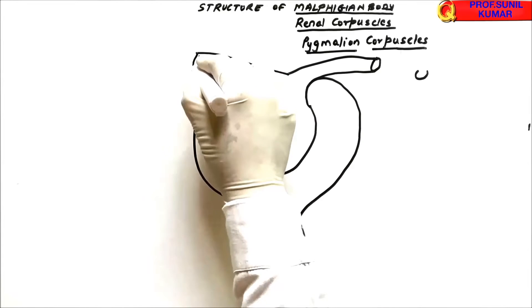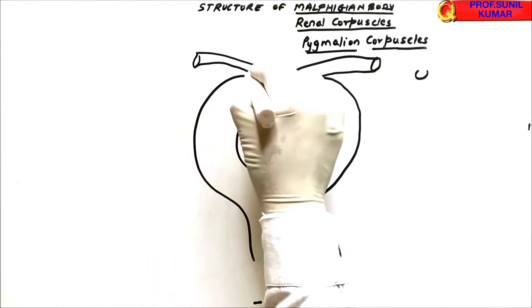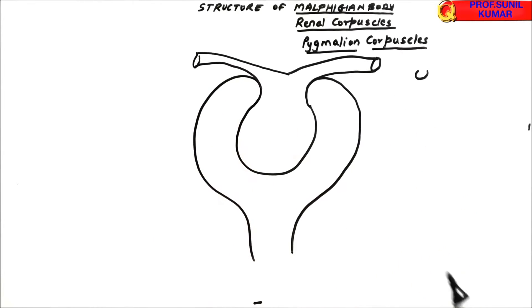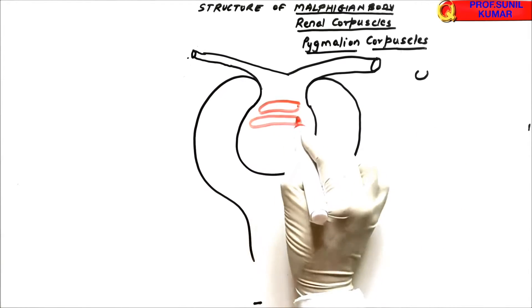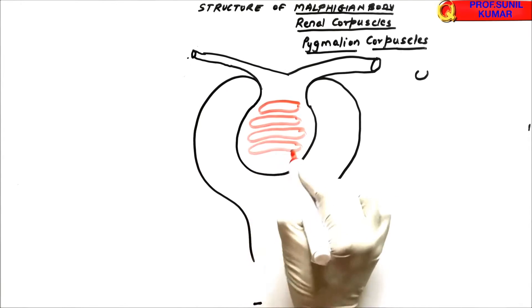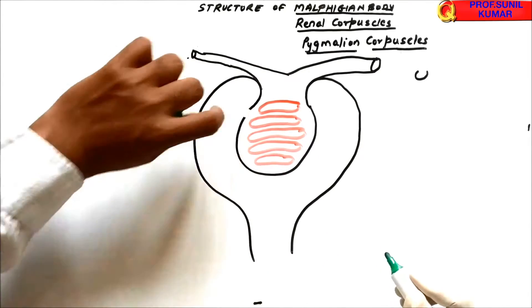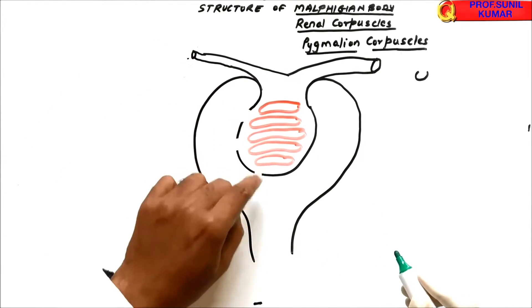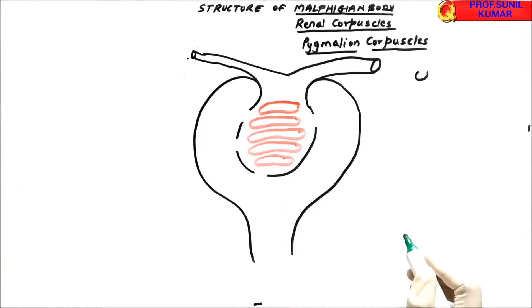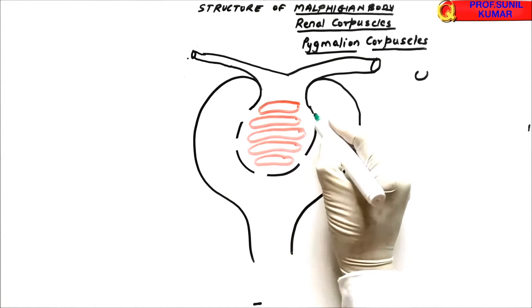Now we need to draw the entry of blood: this is the afferent arteriole. When it leaves, it is the efferent arteriole. The diameter of the afferent arteriole is more, and the efferent is less. Here we are drawing the glomerulus — a dense network of blood capillaries.